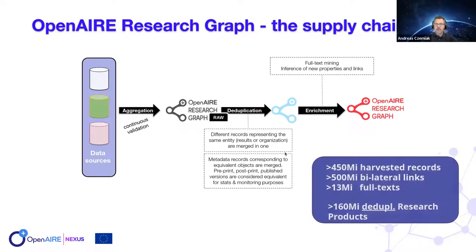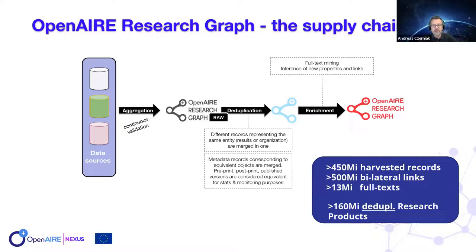For organizations, for example, Bielefeld University may appear as Universität Bielefeld, University of Bielefeld, or Bielefeld University in various sources. After deduplication, enrichments are applied through full-text mining and data mining, and the OpenAIRE Research Graph is finalized. At the moment we have around 450 million records, more than 500 million bilateral links, 30 million full texts, and 160 million deduplicated research products.